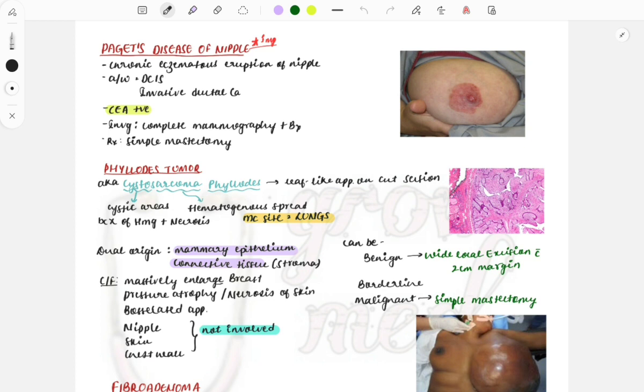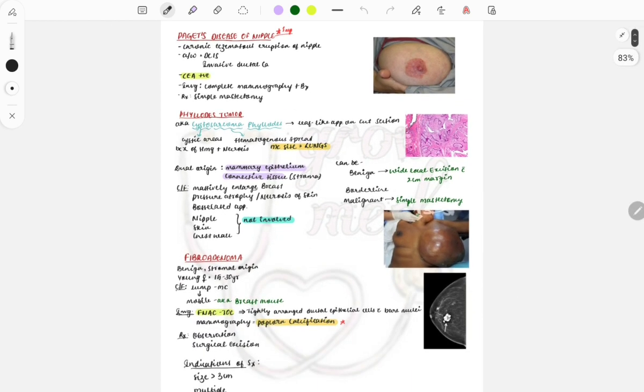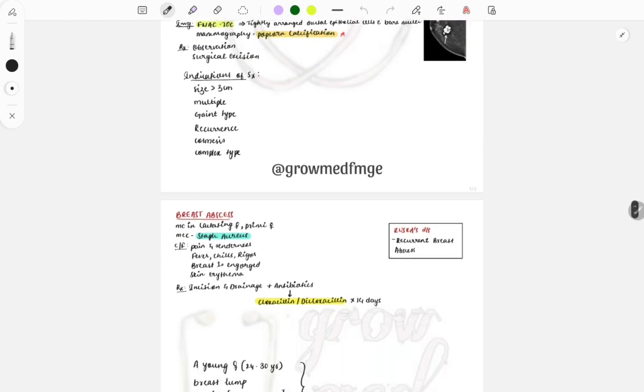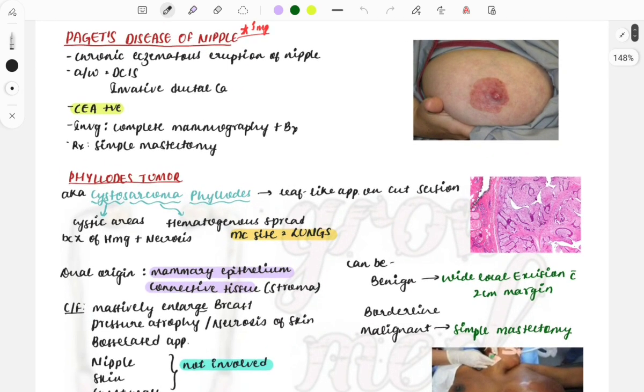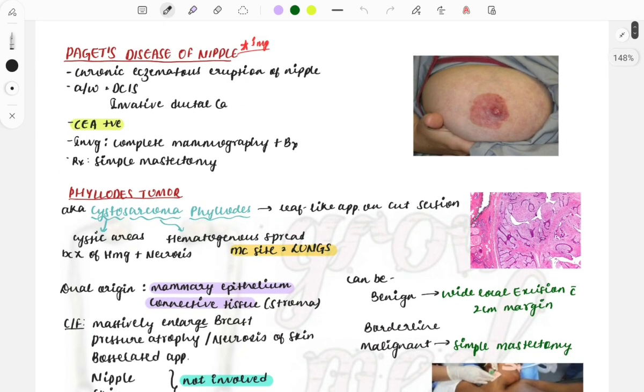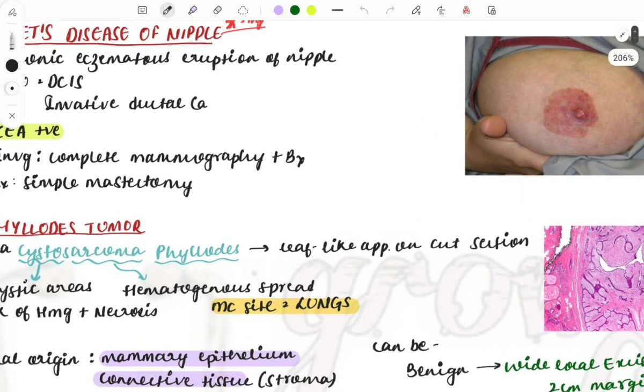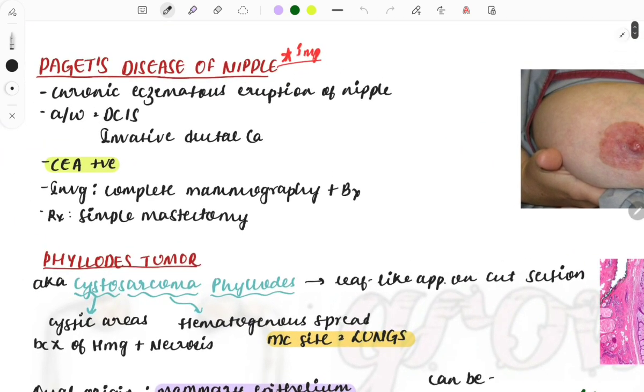There are a few important benign breast tumors frequently asked in the FMG. Let's look at them. First is Paget's disease of the nipple. As the name says, it's a disease of the nipple—a chronic eczematous eruption of the nipple.